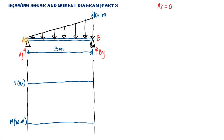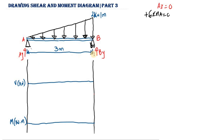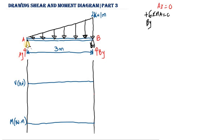To calculate By, we take the summation of moments at point A equals zero. All moments in the counterclockwise direction are positive and all moments in the clockwise direction are negative. Applying force By relative to point A tries to rotate the beam counterclockwise, so it is positive: By multiplied by the distance, which is 3 meters.